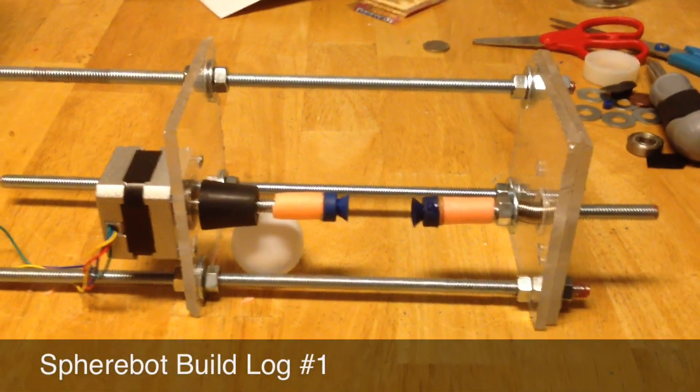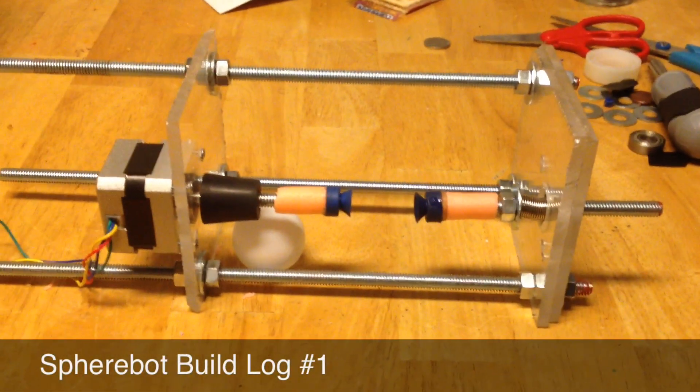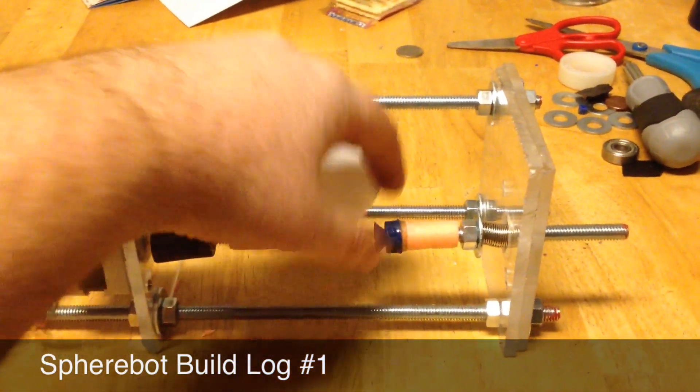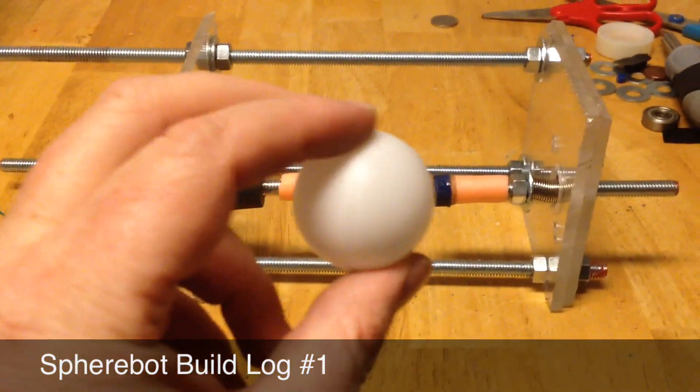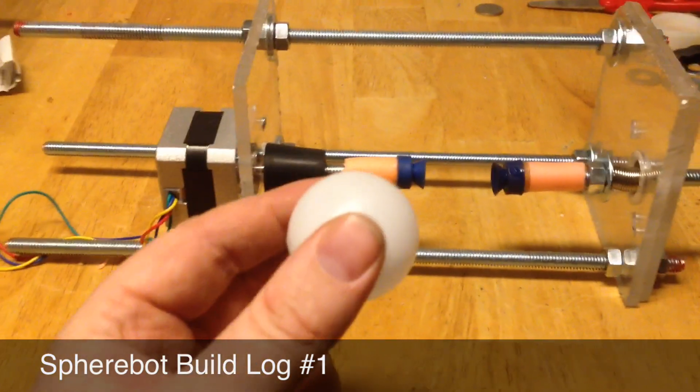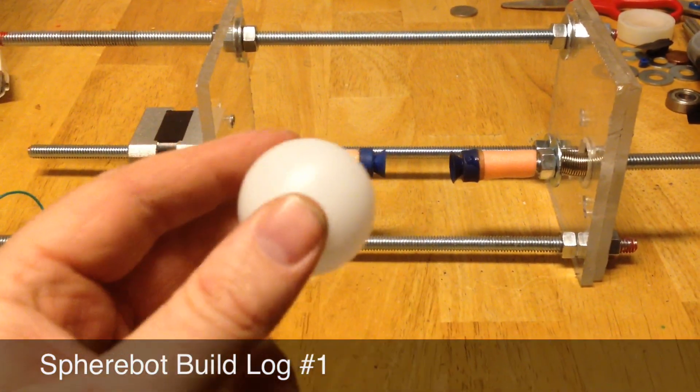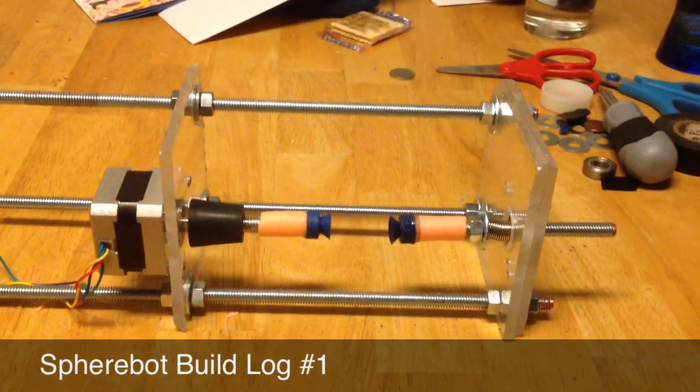Welcome to build log number one for my SpearBot. If you don't know what a SpearBot is, it is a little robot that can draw on the surface of a spherical object. It's also known as an EggBot. You can buy an EggBot kit and build your own, but I just happen to have a lot of parts around the house, so I decided to try and build my own.